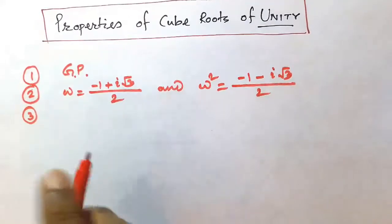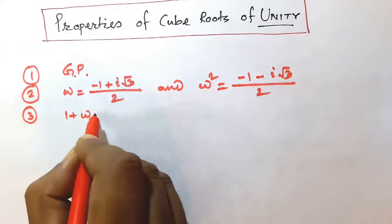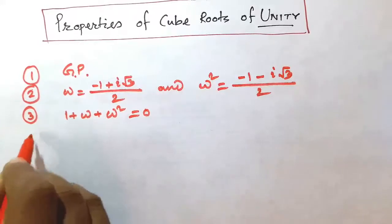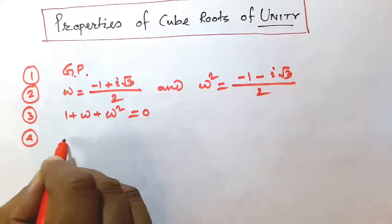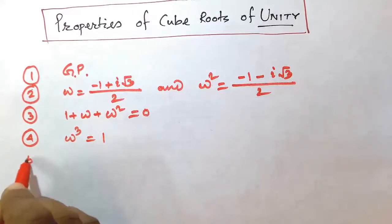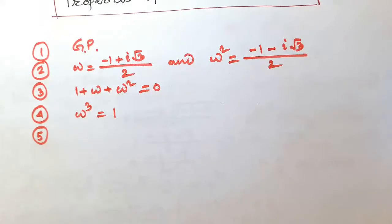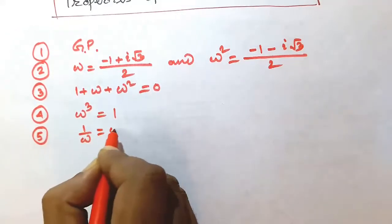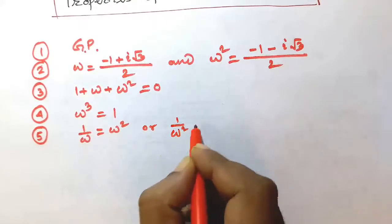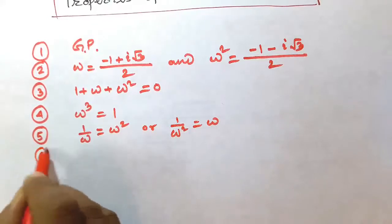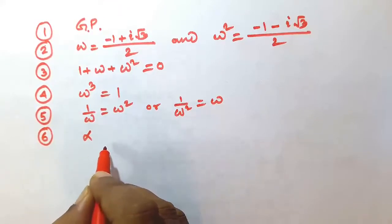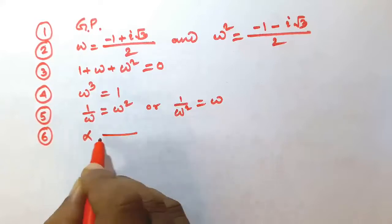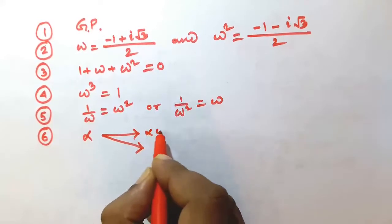Third: the sum of all the cube roots of unity is equal to 0. Fourth: the product of all the cube roots of unity is equal to unity, that is omega cubed equals 1. Fifth: each complex cube root of unity is the reciprocal of the other, that is 1 by omega equals omega squared, or 1 by omega squared equals omega. Sixth: if alpha is a cube root of a number, then its other cube roots are alpha omega and alpha omega squared.